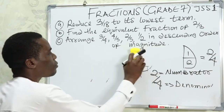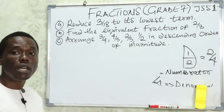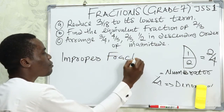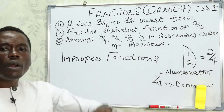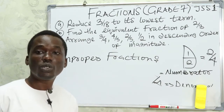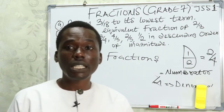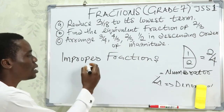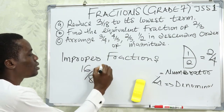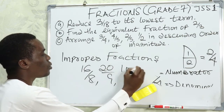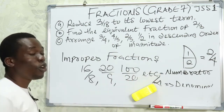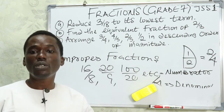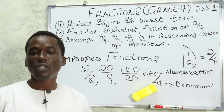The other type of fraction is the improper fraction. Improper fractions are fractions in which the numerator is greater than the denominator. So when you see any fraction where the numerator is greater than the denominator, it is called an improper fraction. Examples include 16 over 8, 20 over 9, 100 over 20, and so on.